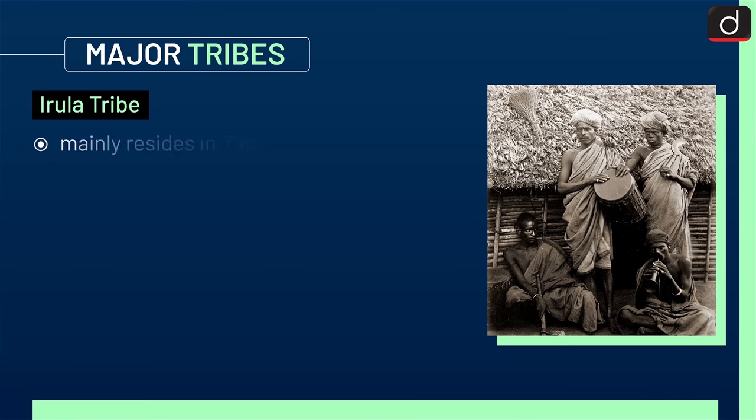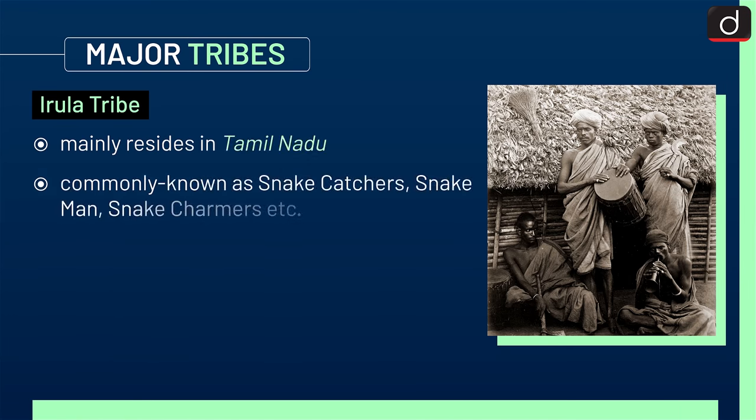Next is the Irula tribe. It mainly resides in Tamil Nadu and is commonly known as Snake Catchers, Snake Man, Snake Charmers, etc.